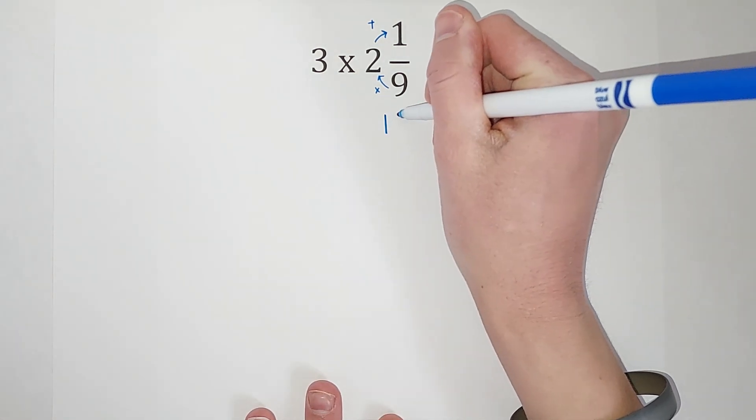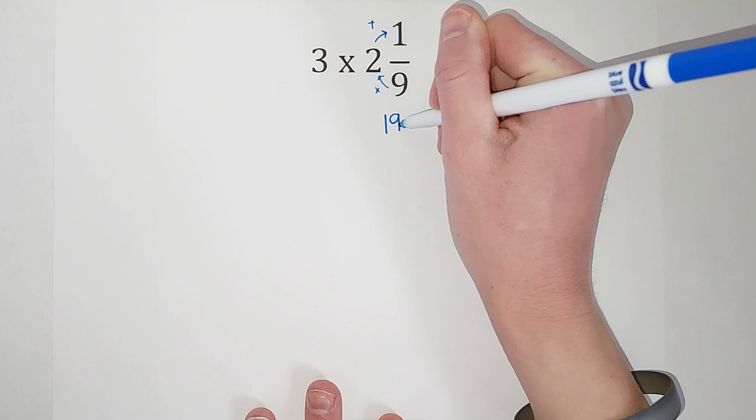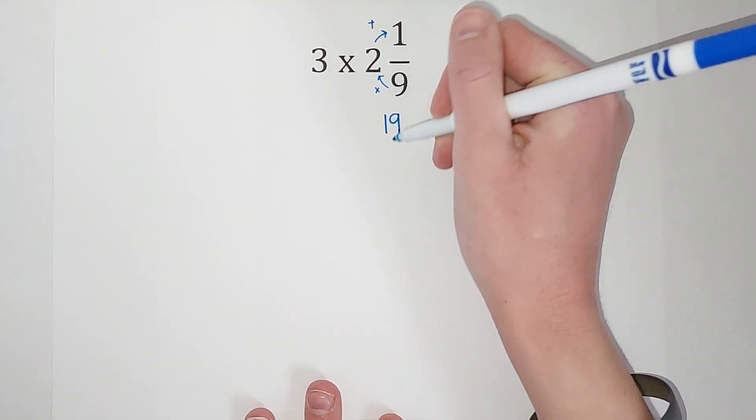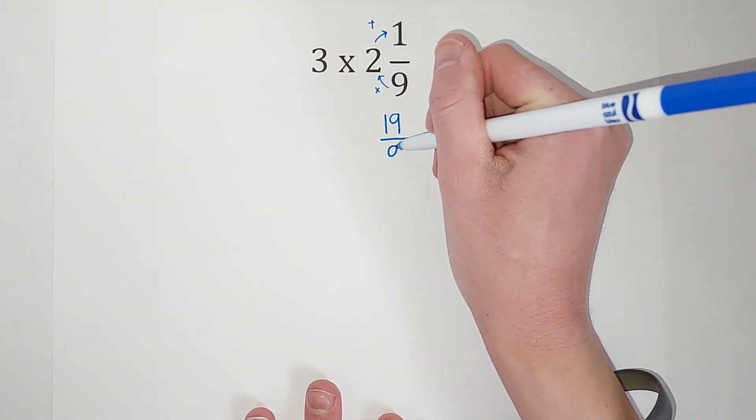So I end up with 19 as my numerator of my improper fraction, and my denominator stays the same. It's a 9.